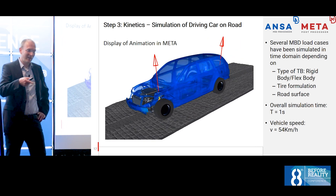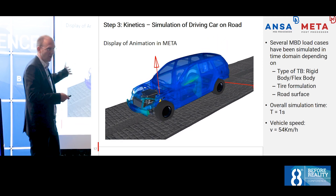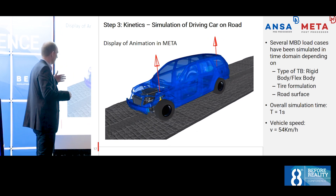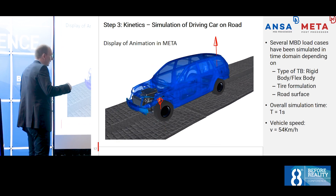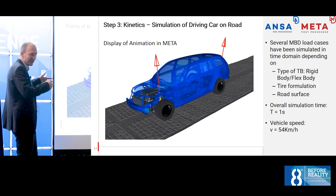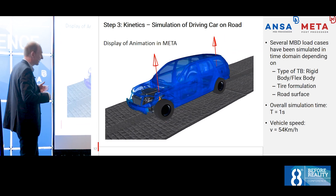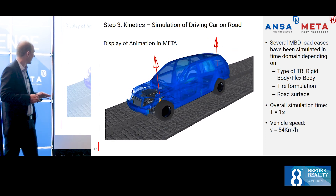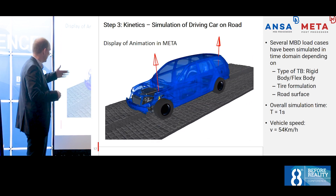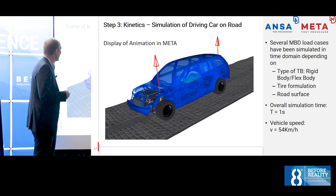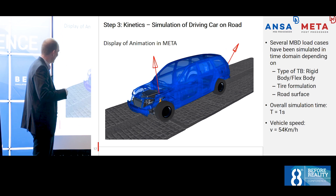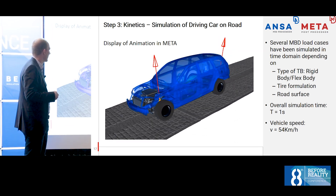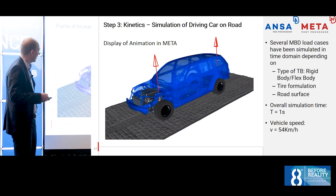This is the output from ANSA kinetics. We take the output files — which could also be output from Adams — put it into MetaPost, and MetaPost can visualize the multi-body dynamic results and display the flexible motions of the car. The arrows show the forces at all interface points, so we can see everything. We calculated the animation for one second in 1,000 steps, so the step size was one millisecond.